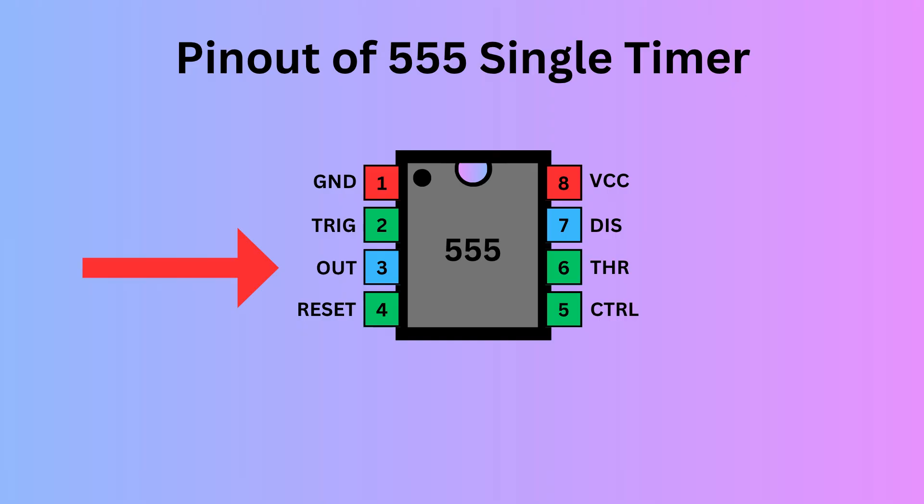Pin 3 is output. It delivers the result of the timer's operation based on its mode, either monostable, astable, or bistable. Pin 4 is reset. It is used to reset the 555 timer's internal flip-flop.